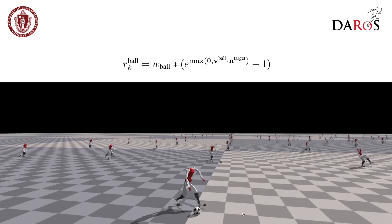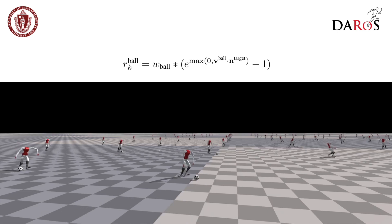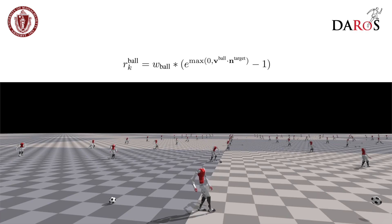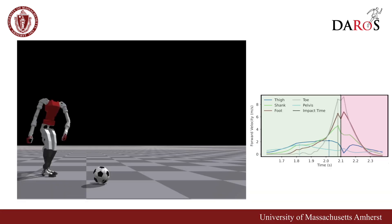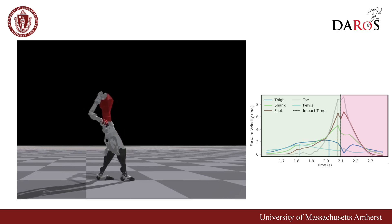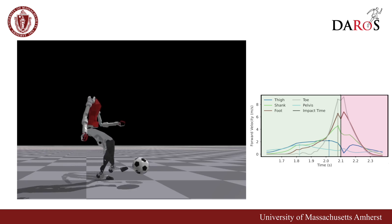Finally, we adapt our trained motion-tracking policy for high-impact soccer kicks by introducing a standard FIFA size 5 ball and a reward function maximizing ball velocity in the desired direction. The robot executes human-like in-step kicks, demonstrating the proximal to distal kinetic energy transfer seen in optimal human kicks.